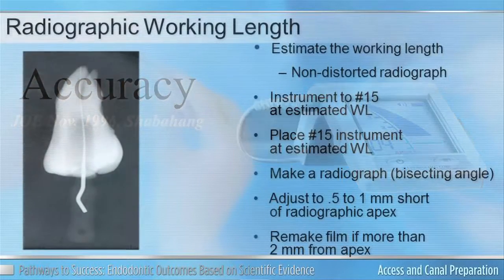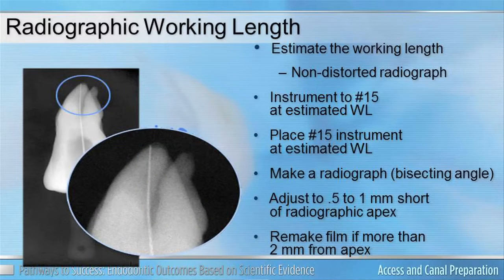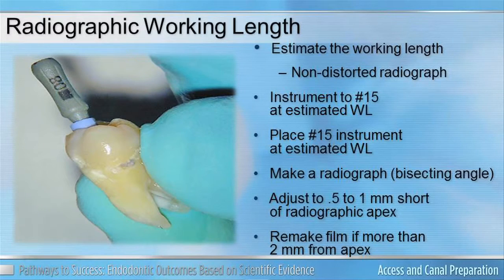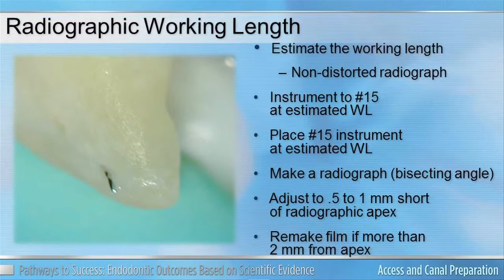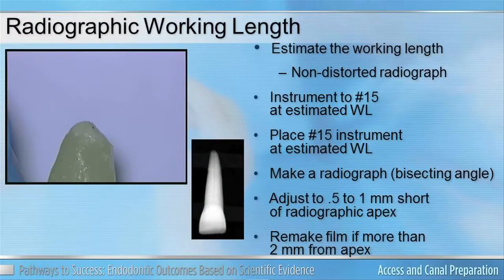When we look at the working length, looking at films, we have to remember that it's actually a two-dimensional image while we're trying to determine a three-dimensional point of reference. Even if we have a good reference point, such as a cusp tip, modified and cut down for reproducibility, we have to remember that that actual working length may appear on a two-dimensional radiograph to be accurate, but if we were to examine that root end, you may see the end of the file sticking through the root. The reason for this is the portal of exit does not always come out at the exact endpoint of the root. That's why it's important for us to implement the use of things like an apex locator.